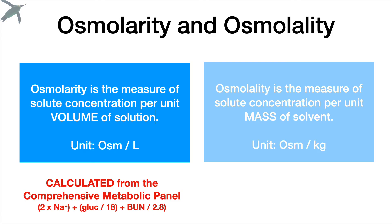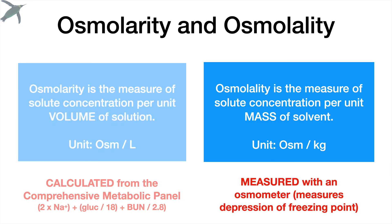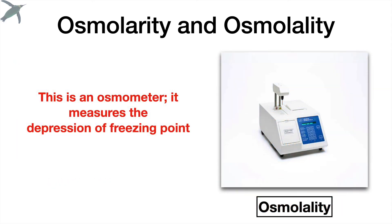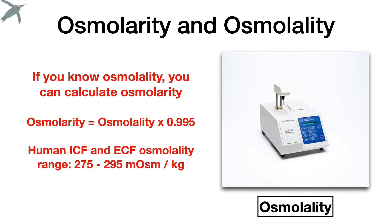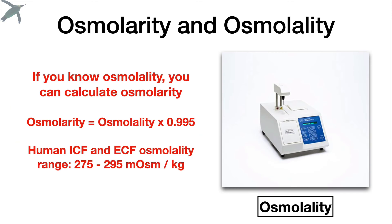Osmolarity is calculated from the CMP, and if you're allied health, most of the osmolarity is due to sodium — sodium is the VIP at the party. BUN is just blood urea nitrogen. Osmolality can be measured with an osmometer, which measures the depression of freezing point. The take-home message is that you can see why these two terms are often used interchangeably, but they're not the same thing. In clinical applications, the difference is usually less than half of a percent. But because one is calculated and one is measured, and you will see them both, you need to know the difference — and now you do.